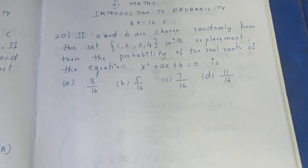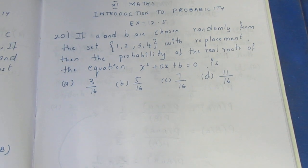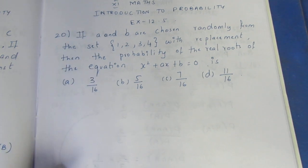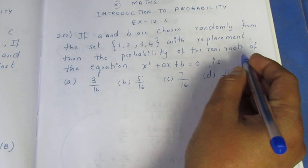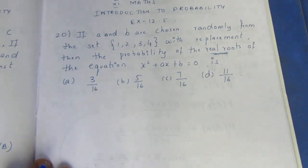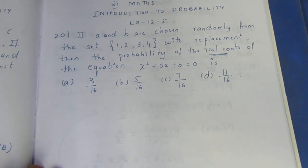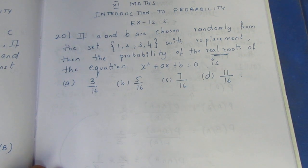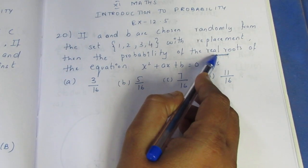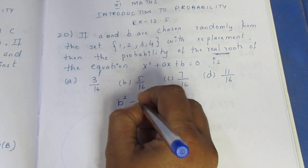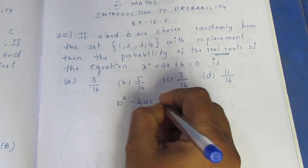If A and B are chosen randomly from the set {1, 2, 3, 4} with replacement, then we need to find the probability of real roots of the equation. For real roots, b squared minus 4ac must be greater than or equal to zero. For real and equal roots it equals zero, and for real and unequal roots it is greater than zero.